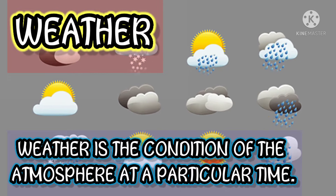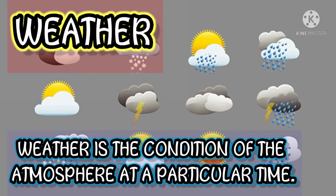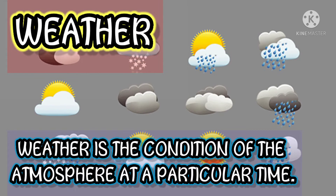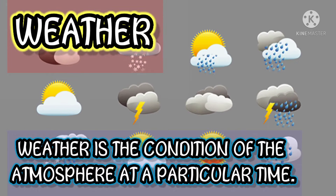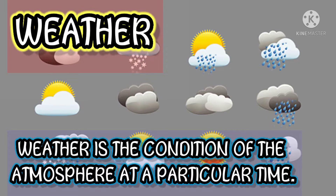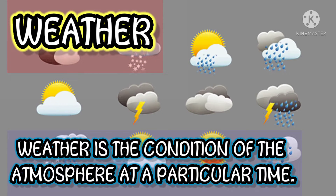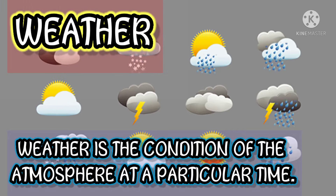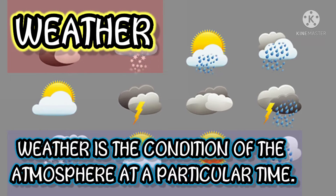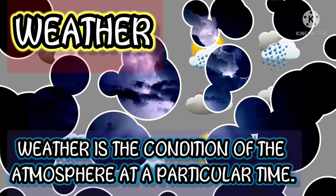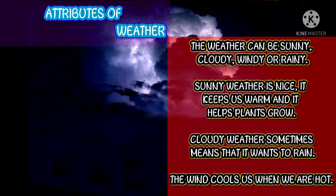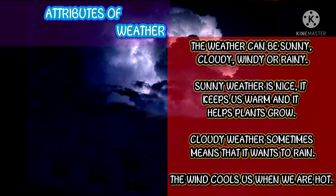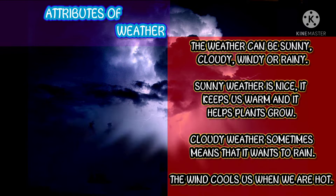First, what is weather? Weather is the condition of the atmosphere at a particular time. Sometimes it can be raining in our environment, while sometimes it is sunny.